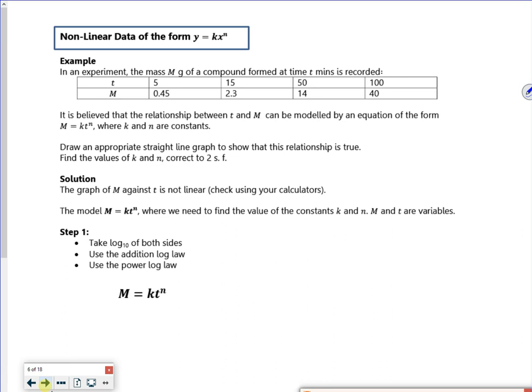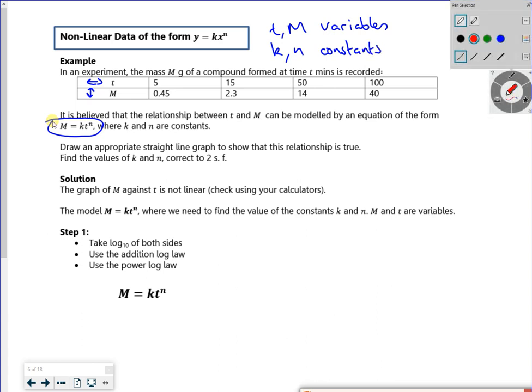Before, the x was on the power. Now it isn't. The x is down on the base. So this has got, so it's looking like it's a relationship between t and m. I think it's mass and time. So you've got to remember that m is going up and that t is going across. So we know that t and m, they're the variables. And then k and n are the constants. And that's what we want to find.